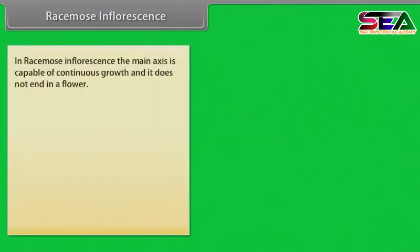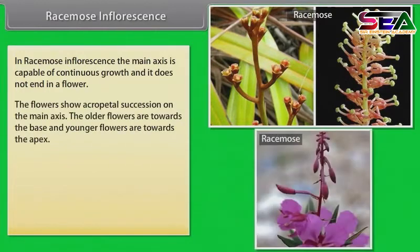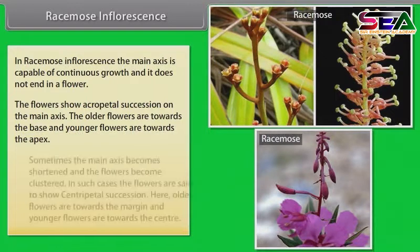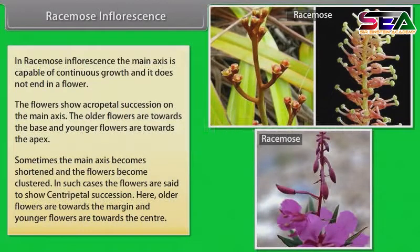In racemose inflorescence, the main axis is capable of continuous growth and it does not end in a flower. The flowers show acropetal succession on the main axis — the older flowers are towards the base and younger flowers are towards the apex. Sometimes the main axis becomes shortened and the flowers become clustered; in such cases the flowers show centripetal succession, where older flowers are towards the margin and younger flowers are towards the center.